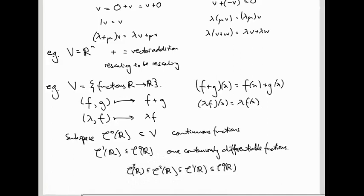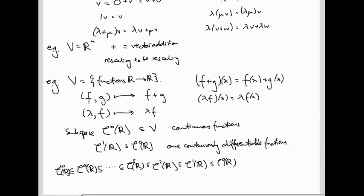You can keep going, and inside all of these you get the infinitely differentiable functions — the functions you can differentiate as often as you like. And inside those, even better, there are the so-called analytic functions, and all of these are subspaces. For example, if you take two infinitely differentiable functions and add them, you get another infinitely differentiable function. What are the analytic ones? These are the ones whose Taylor series converges within some radius — in particular, they have to be infinitely differentiable before you can even write down the Taylor series.